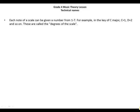Each note of a scale can be given a number from 1 to 7. For example, in the key of C major, C will be 1, D will be 2, and so on. These are called the degrees of the scale.